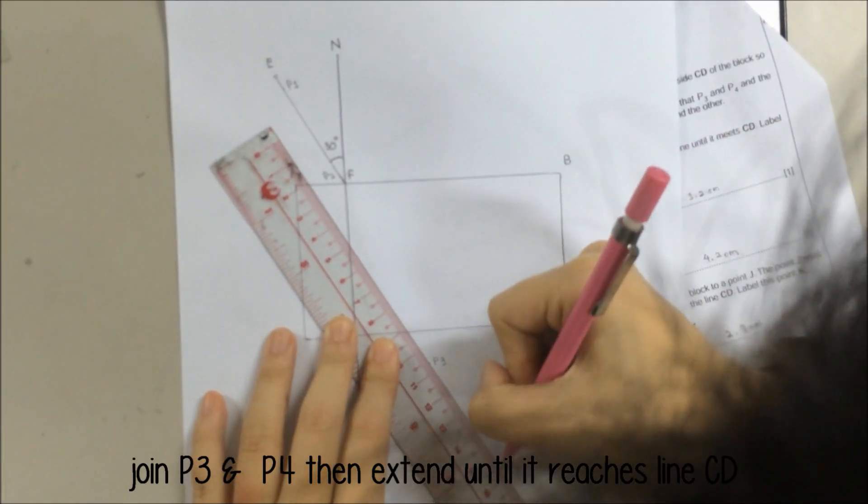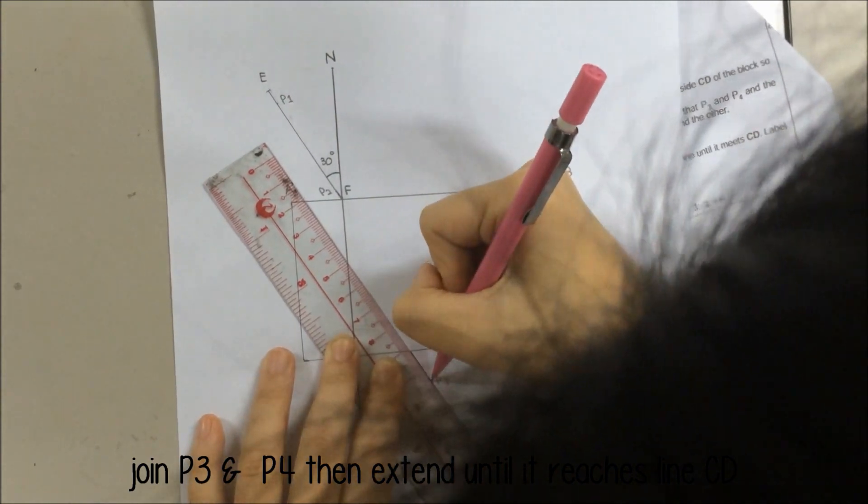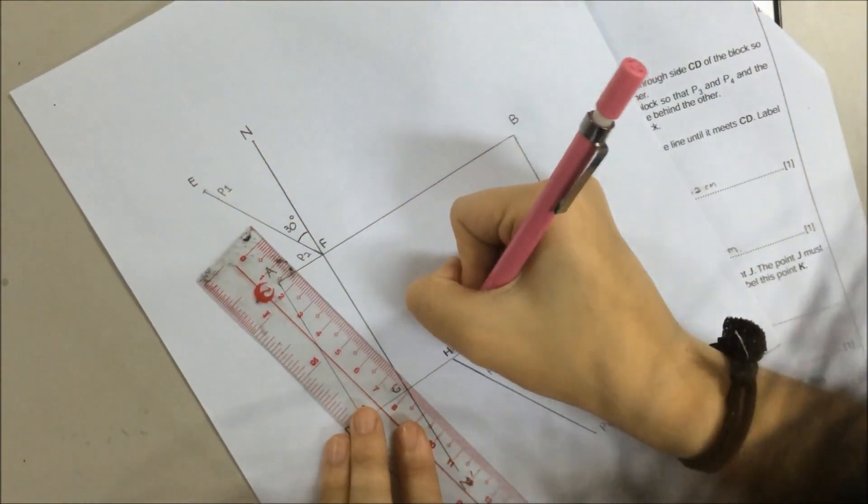Step 9: Join P3 and P4 and draw a line extending until line CD. Label the intersection point as H.